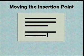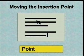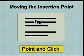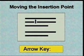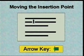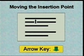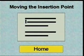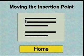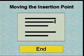Moving with the mouse is pretty simple — just point and click. We can also move the insertion point with the arrow keys on the keyboard. The Home key moves it to the beginning of the line, while the End key moves it to the end of the line.